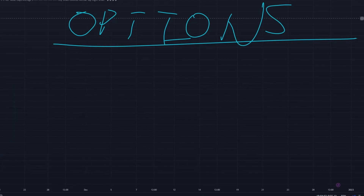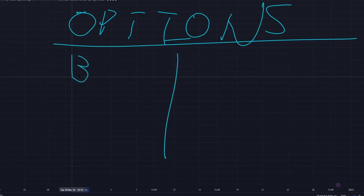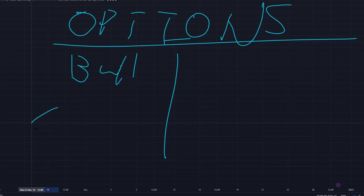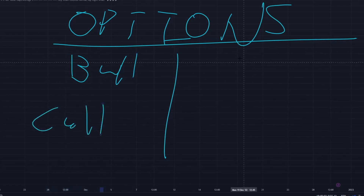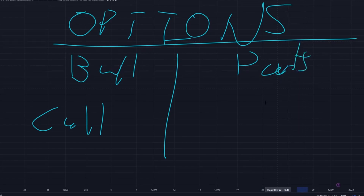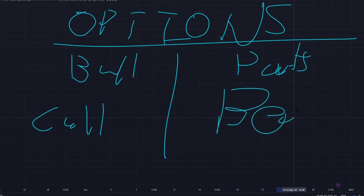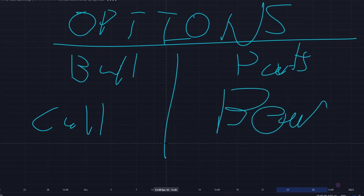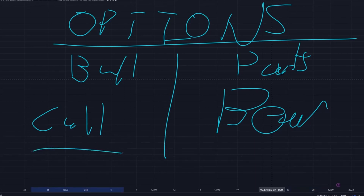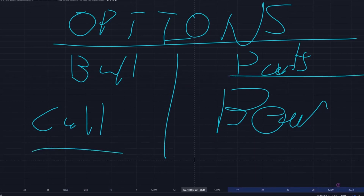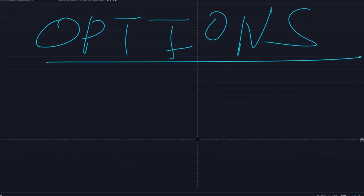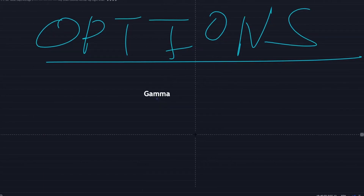Quick clarification on the two sides of options: if you're a bull and think the company is going to go up, you're on the call side. Puts are bearish. Basic split: calls are bullish, puts are bearish.